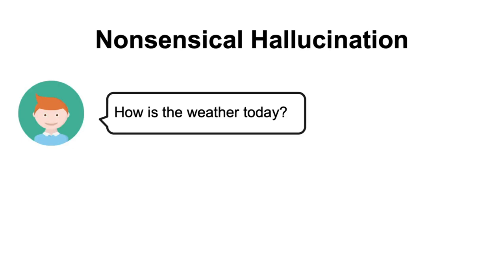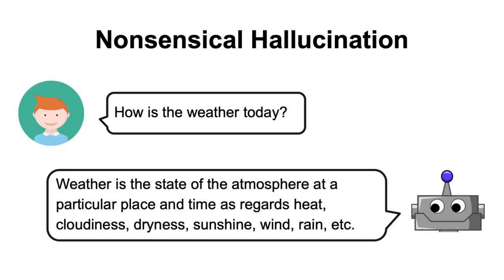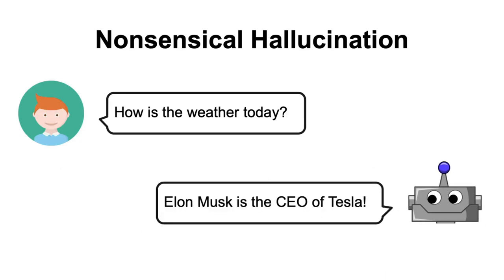The last category of hallucination I would like to emphasize is called nonsensical hallucination, and it refers to responses that are unrelated to the given prompt. An example of this type would be if we asked the model to tell us about the weather outside, and the response we got would be related to our question but missing the point, like answering with the definition of weather, or the answer would be totally unrelated to the question, like Elon Musk is the CEO of Tesla. So these are just a few ways in which a language model can hallucinate — there are more, but I won't cover them in this video.